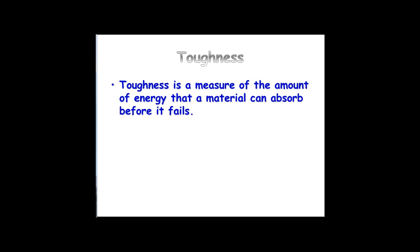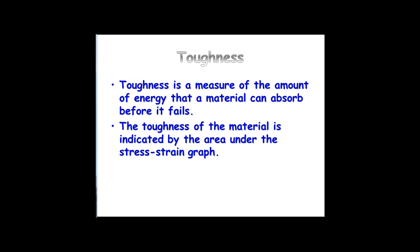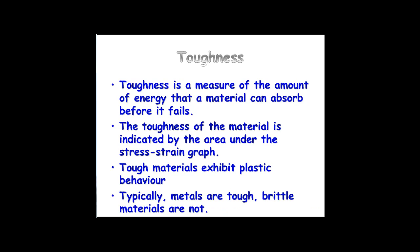Another definition: toughness. This is the amount of energy that a material can absorb before it fails. Stiffness was the gradient — the greater the gradient, the greater the stiffness. Strength was the tallest point on the graph — the one that could take the most stress. Toughness is the one that can absorb the most energy. Therefore, if you have a greater area under the graph, you have a tougher material. Those that undergo plastic behaviour produce a larger area under the graph, so those are going to be tougher. Typically, metals are tough; brittle materials aren't.